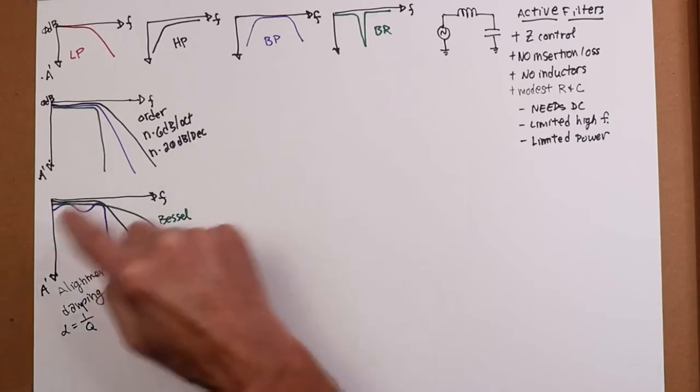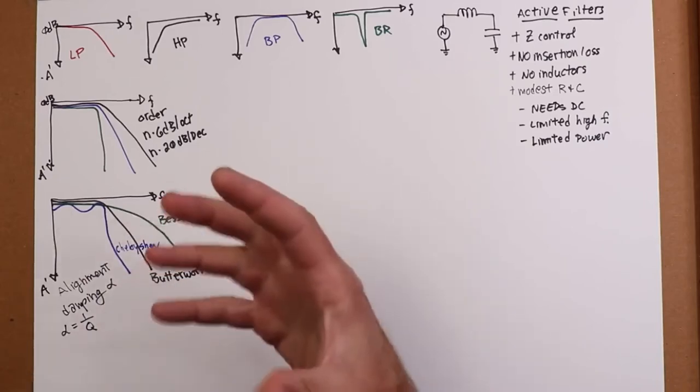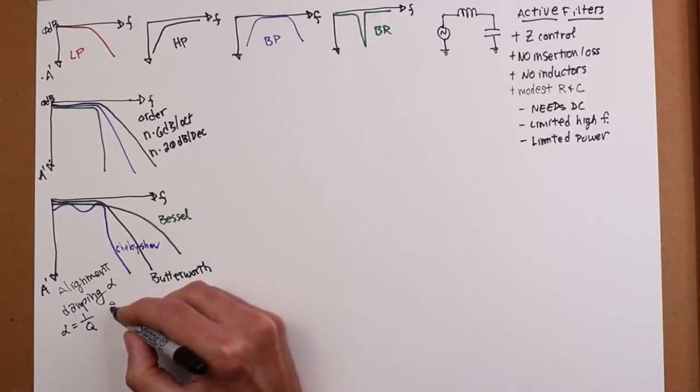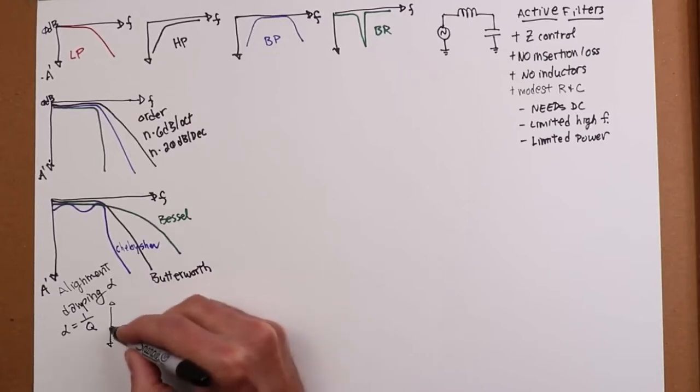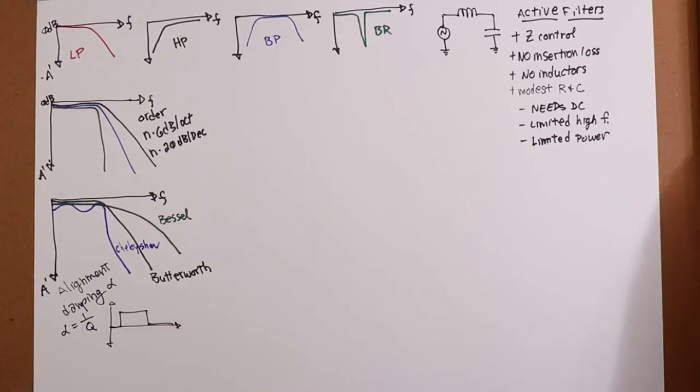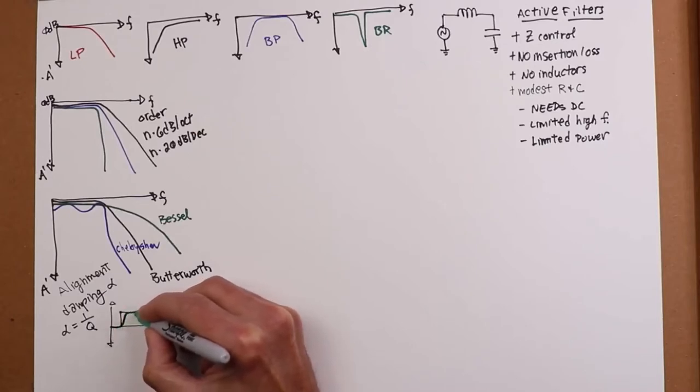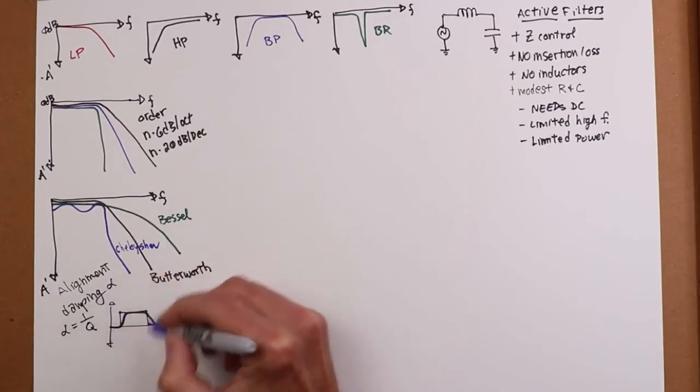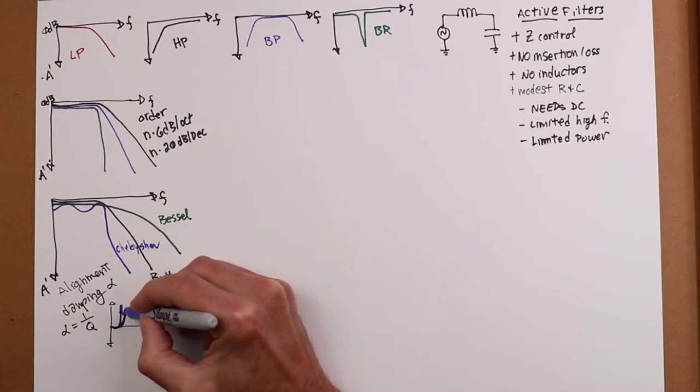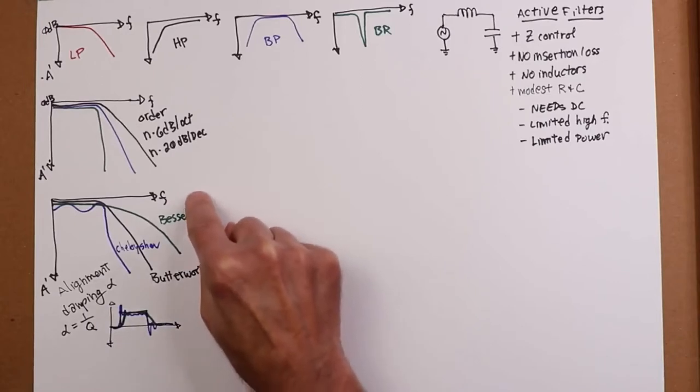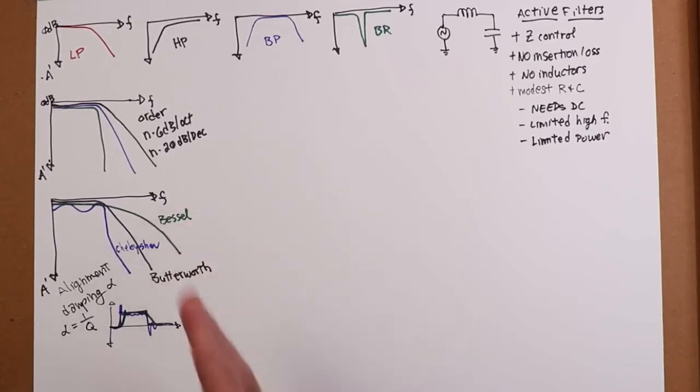So what ends up happening is these curves also have a change in the time domain. If you were to look at a square pulse, ideally you have a nice square pulse in time. It does this, you know, nice step response. Your Bessel is going to give you a nice response here. It's kind of smoothed out. So it looks good in time. The Chebyshev will have a very fast rise and fall time, but it's going to ring. It's going to do something like this. And then the Butterworth is kind of in the middle.